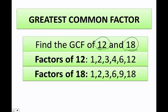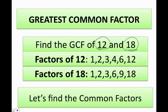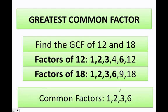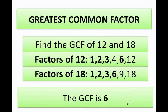Once I've figured out the factors of 12 and the factors of 18, I can go ahead and find the common factors first. The common factors are 1, 2, 3, and 6. But remember, I want the greatest common factor. Between all of these, which one is the greatest? The greatest common factor of 12 and 18 is 6.